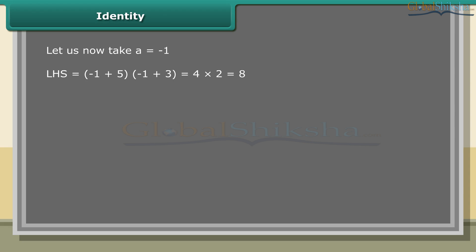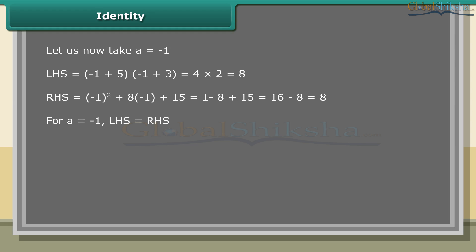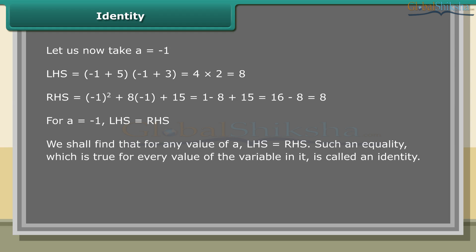Now take a = −1. LHS: (−1 + 5)(−1 + 3) = 4 × 2 = 8. For a = −1, LHS equals RHS. We find that for any value of a, LHS equals RHS. Such an equality which is true for every value of the variable is called an identity. Thus, (a + 5)(a + 3) = a² + 8a + 15 is an identity.